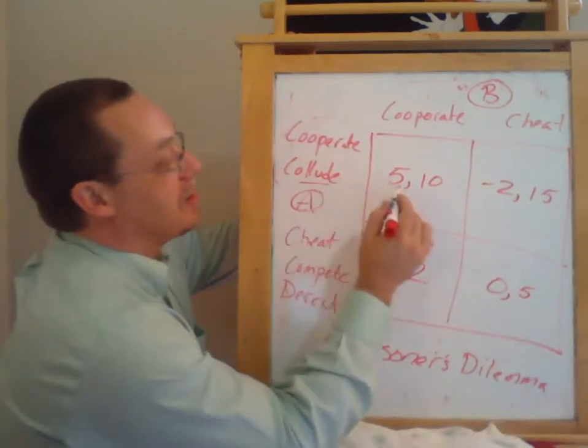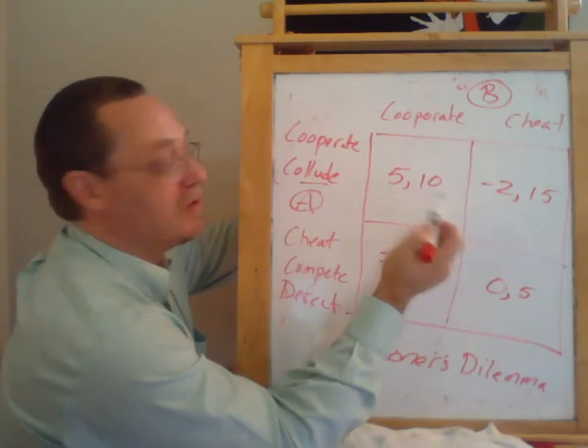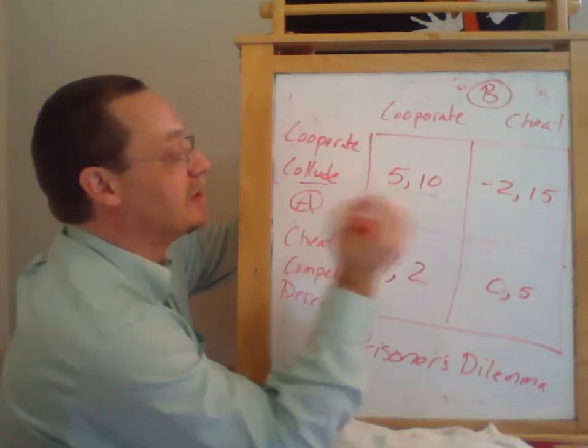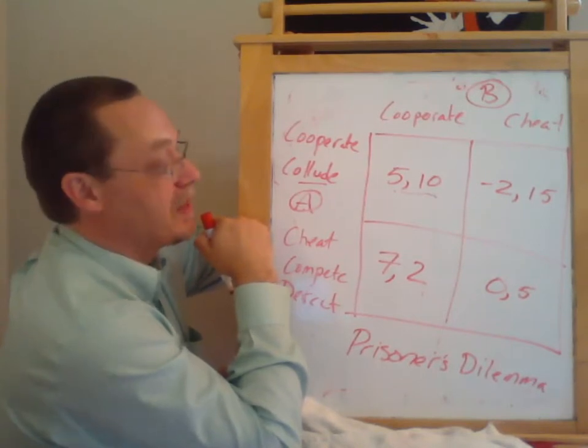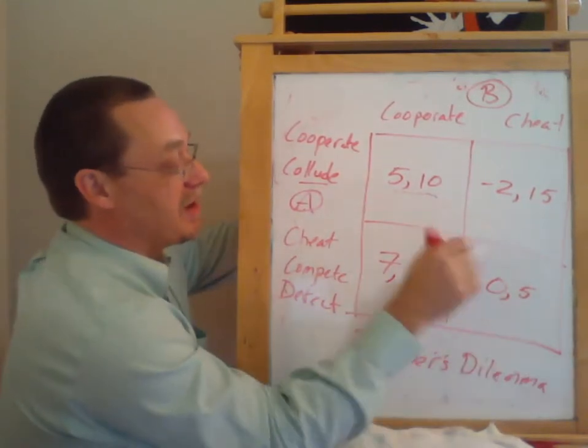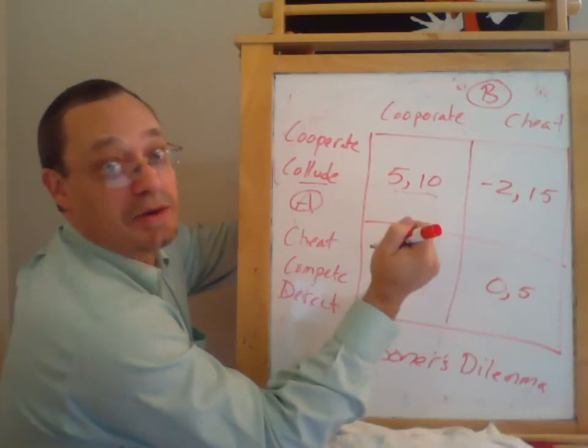So you can see from these two firms' point of view, the best outcome is up here. They have combined payoffs, payoffs of 15. And every other square has lesser combined payoffs.